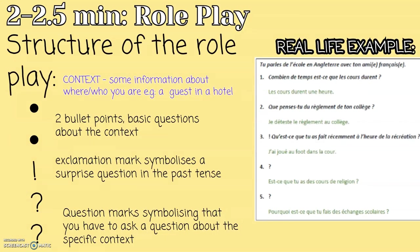The structure of the role play: you have two bullet points which are just basic questions. Then you have an exclamation mark, which symbolises a surprise question in the past tense. This is a question you will not see in your preparation time — your teacher or invigilator will just tell you directly and you'll have to answer with a simple response in the past tense. Then you have two question marks, which symbolise that you have to ask a question about the specific context. For example, you might be told you're a guest in a hotel and your question could be something like what time is breakfast. You can prepare all of these except the surprise question in your 12-minute prep time, but don't spend any longer than two minutes prepping this, as it only requires simple responses.